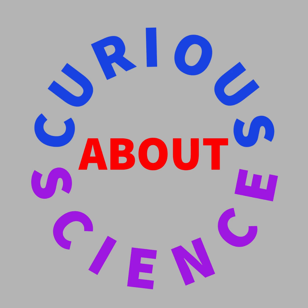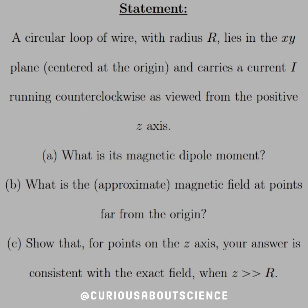Alright, back with these dipole things. The statement reads, A circular loop of wire with radius r lies in the xy plane centered at the origin and carries a current I running counterclockwise as viewed from the positive z-axis.